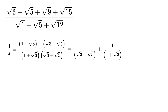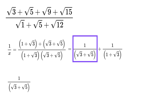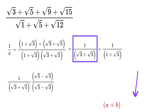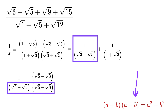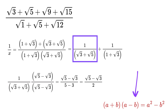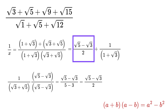As a next step, we will rationalize each term separately. To rationalize 1 divided by square root of 3 plus square root of 5, we multiply both the numerator and denominator by square root of 5 minus square root of 3. Using the identity (a + b)(a − b) = a² − b², we get the denominator as 5 minus 3, or 2. So 1 divided by square root of 3 plus square root of 5 simplifies to square root of 5 minus square root of 3, divided by 2.